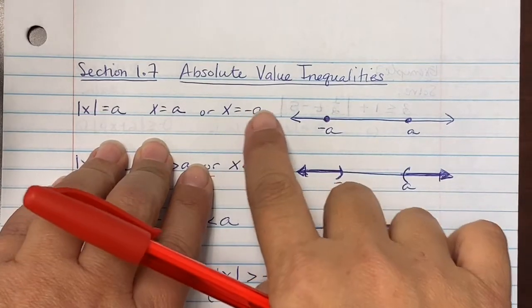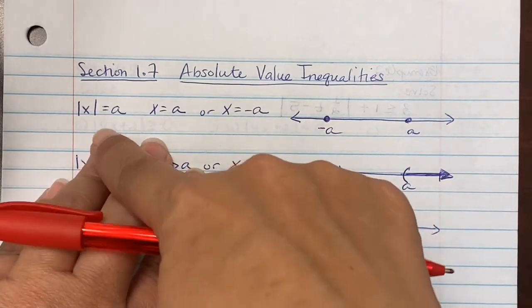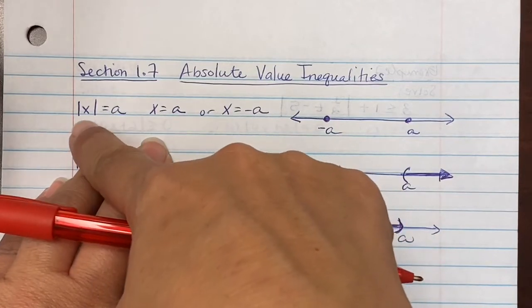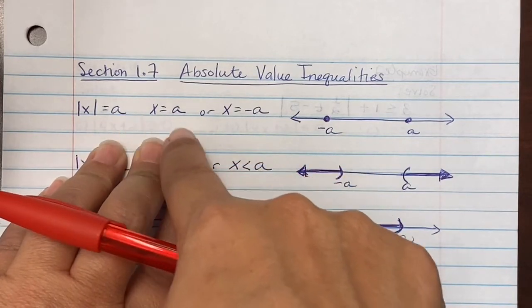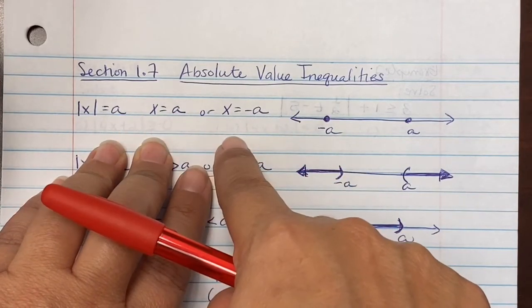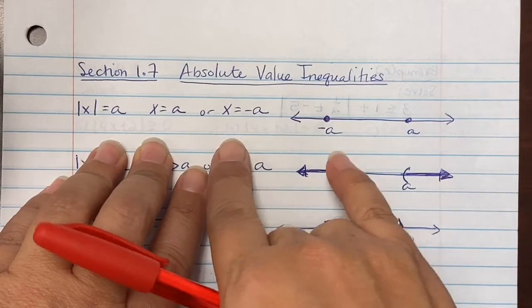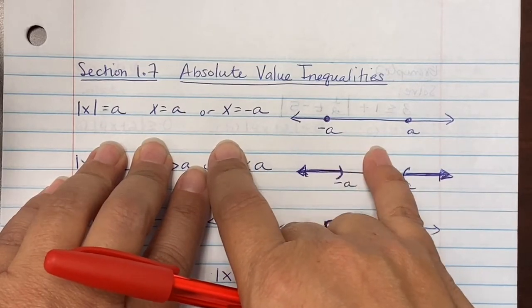Section 1.7: absolute value inequalities. Earlier in section 1.6 we learned about absolute value of x equaling a, which gave us x equal to a or x equal to negative a, so you plotted two points: negative a and positive a.